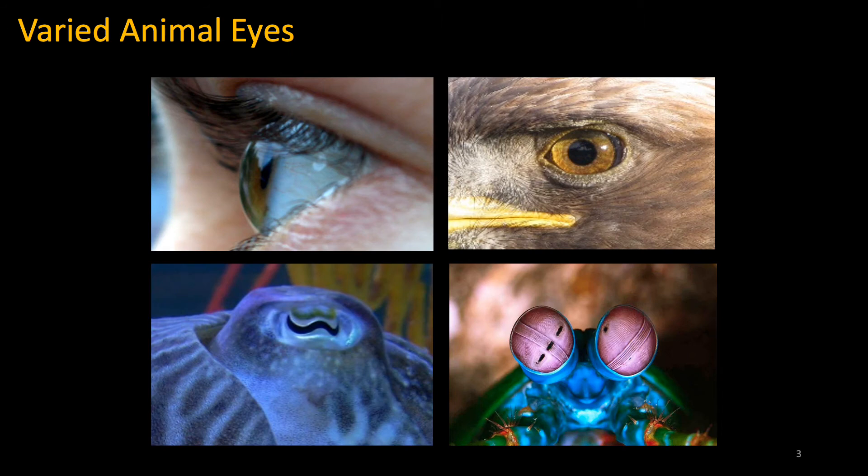Various animal eyes selectively distribute resolution to important areas in their field of view. Selective imaging is crucial for efficiently expending neuronal resources only where it matters. The fovea in humans is a highly sensitive area in the retina that focuses resources to our direct line of sight, letting us efficiently process our field of view only where we want and need.